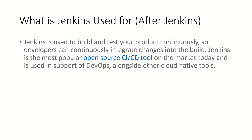Jenkins is used to build and test your product continuously. Each time someone commits changes it will start the build, start the test, and then start the deployment. If anything is failing, the developer will immediately get notified and start working on the errors, so the developer can continuously integrate changes into the build. Jenkins is the most popular open source CI/CD tool on the market today and is used in support of DevOps alongside other cloud native tools.